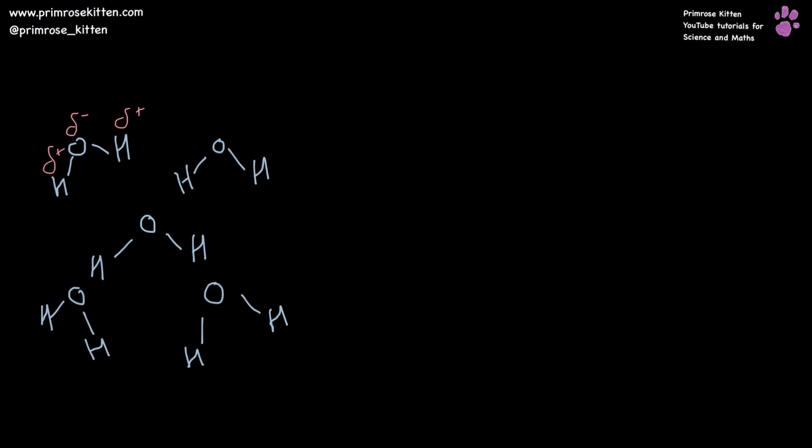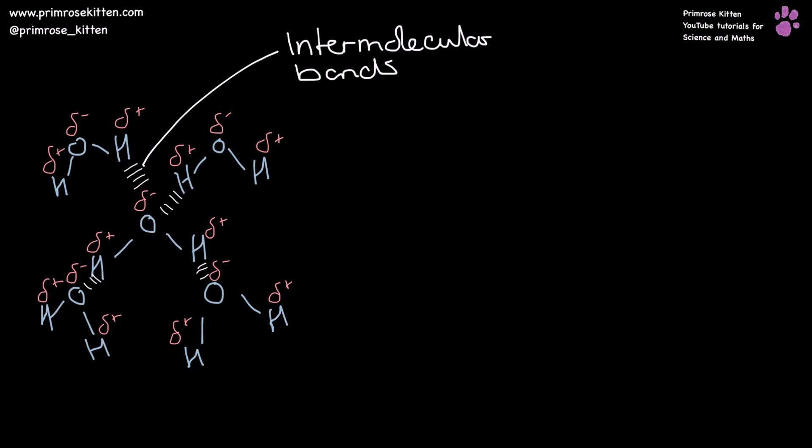Here we have water, and if you've already noticed that I keep drawing water with this bent structure, I will explain why that is in a different video. The oxygen on water is a little bit, or delta negative, and the hydrogen on water is a little bit, or delta positive. Opposites attract, so positives and negatives are attracted to each other. Here we have our attraction from our delta positive hydrogen to our delta negative oxygen, and these are the attractions that keep water as a liquid or as a solid. These are the intermolecular bonds, and intermolecular bonds are very weak.